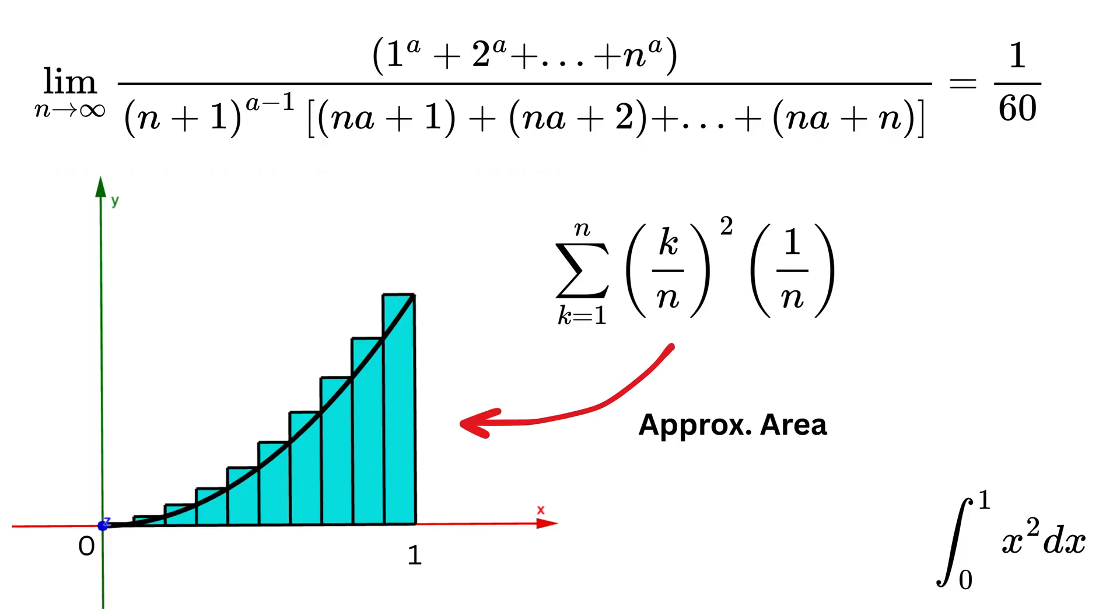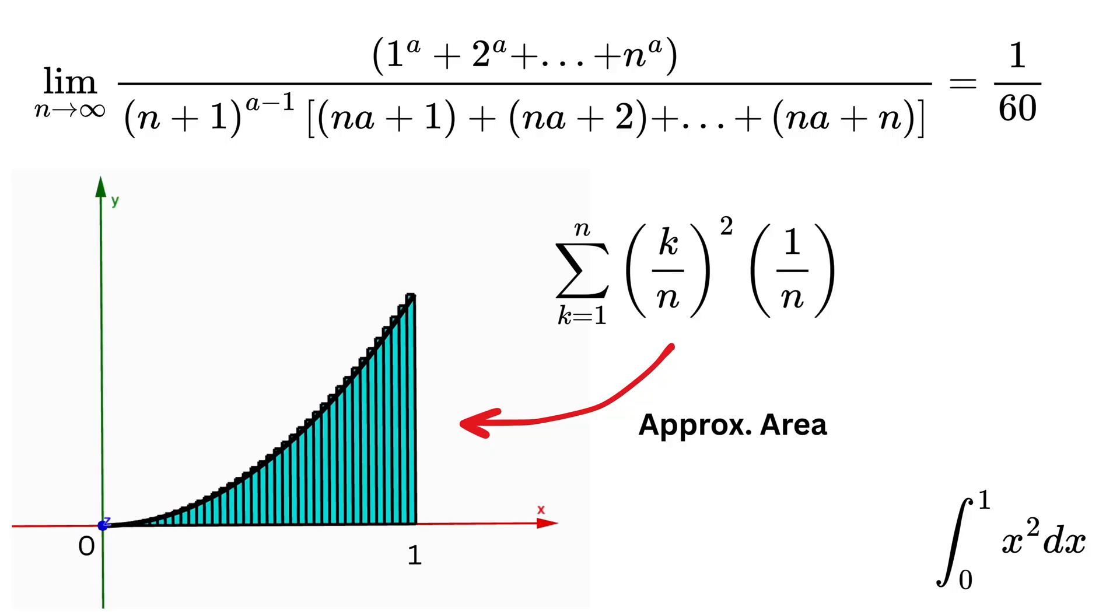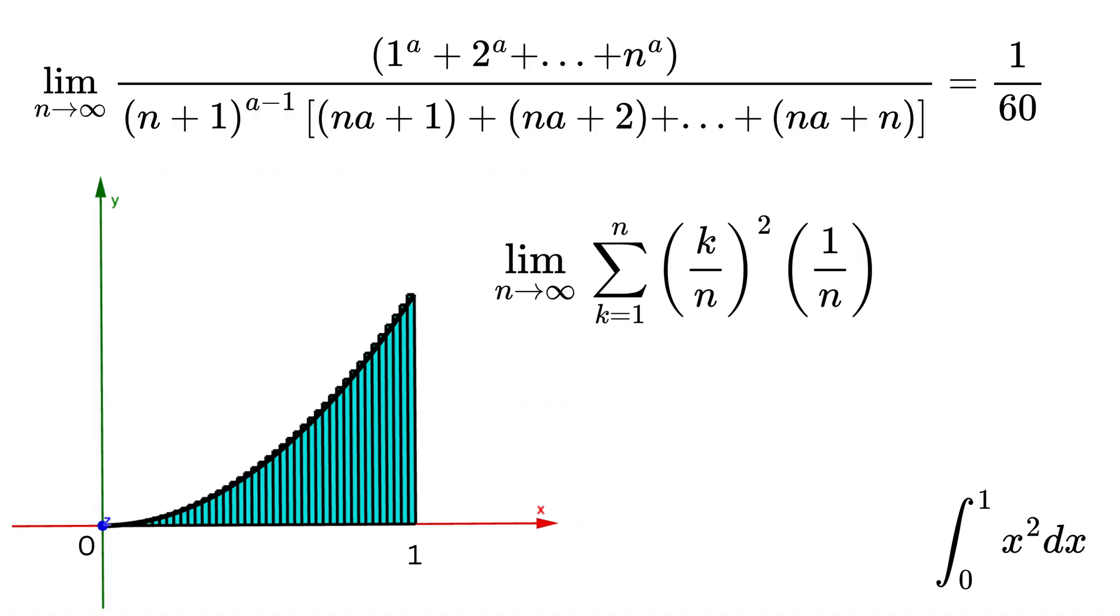And you get a sum that approximates the area under the parabola. Now as you let n grow bigger and bigger, almost infinite, the rectangles get thinner and the sum approaches the exact area. So we can apply the limit n tends to infinity here, and then we have the sum of k divided by n whole squared multiplied by 1 divided by n.